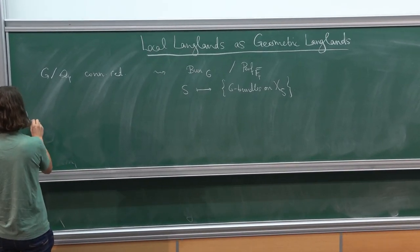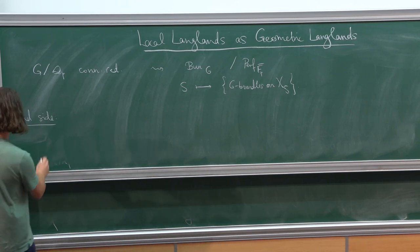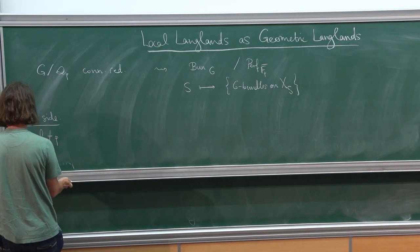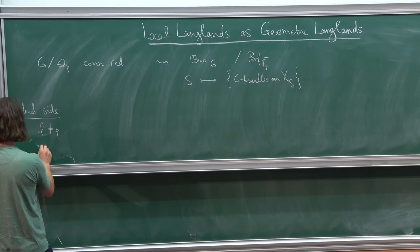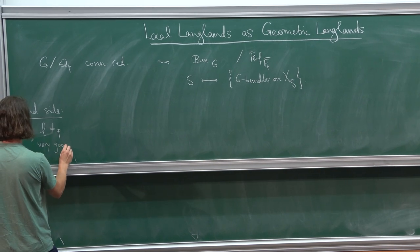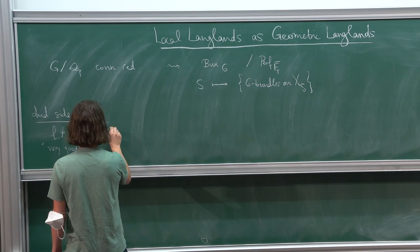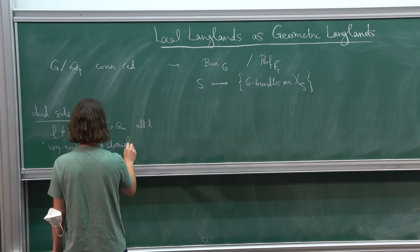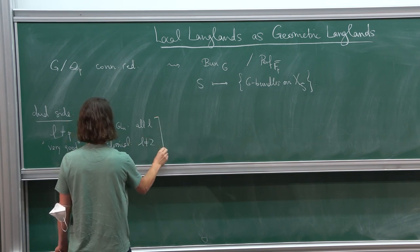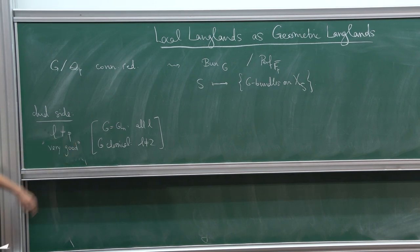On the dual side, the Langlands dual side, which I didn't talk about last time, we have some prime L not equal to p because I will look at some kind of L-adic sheaves. At some point in my talk I need to assume that this is not too small. In our paper we call this 'very good', which sounds like a very strong condition, but I want to point out it's really not a strong condition. If G is GL_N, this is really all L, and if G is classical in the sense used at this conference, then it just means that L is not 2. I'm always working with integral coefficients Z_L, and if you work with Q_L coefficients you can completely forget about this.